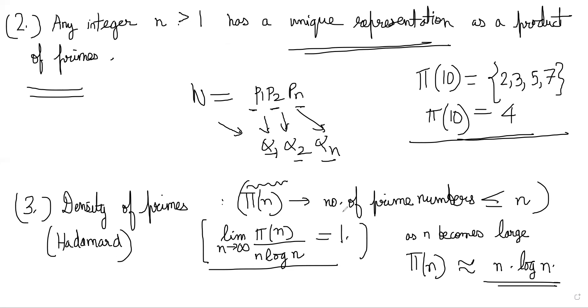However, we will not see applications of this result very frequently in Olympiad problems, because the proof is slightly advanced and constructing a problem that utilizes this concept might be difficult to encounter. But it's interesting to know the density of prime numbers. This approximation becomes better and better as n becomes larger and larger. So these are the two or three things you need to be aware of about prime numbers at this level. Now let's try to solve a couple of questions.